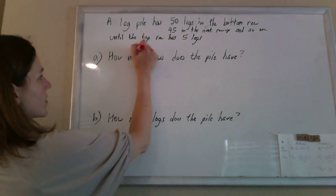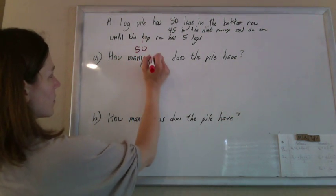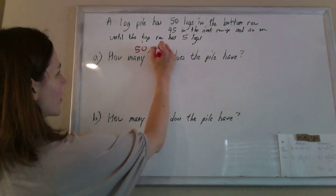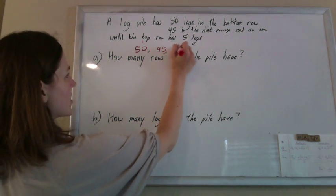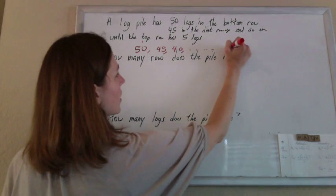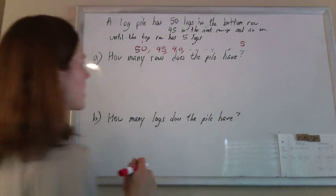So our pile has 50 logs in the first row, 45 in the next, and then just keep subtracting 5 until you get 5 logs in that top row.